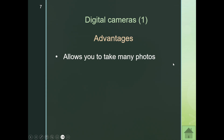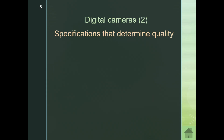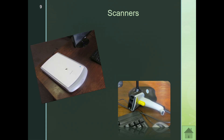Digital cameras allow you to take many photos, see the image immediately, and easily transfer it to your computer. However, certain specs determine quality. When buying a DSLR, point-and-shoot, or smartphone camera, you need to ask about the lens, sensor size, optical zoom, digital zoom, resolution, and ISO rating. We'll go through each of these so you understand what's being said.